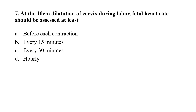Question number 7: At 10 cm dilation of cervix during labor, fetal heart rate should be assessed at least — option A: before each contraction; option B: every 15 minutes; option C: every 30 minutes; option D: one hour. The correct option is B, that is every 15 minutes the fetal heart rate should be assessed at 10 cm dilation of cervix.